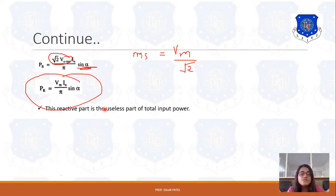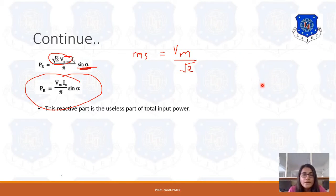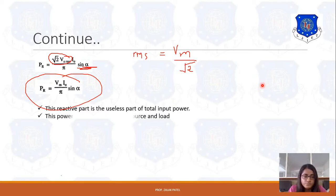Reactive power is a useless part of the total input power. It is not a desirable term, so it should be as minimum as possible, ideally near zero, though practically it cannot be exactly zero. It only travels between the source and load.